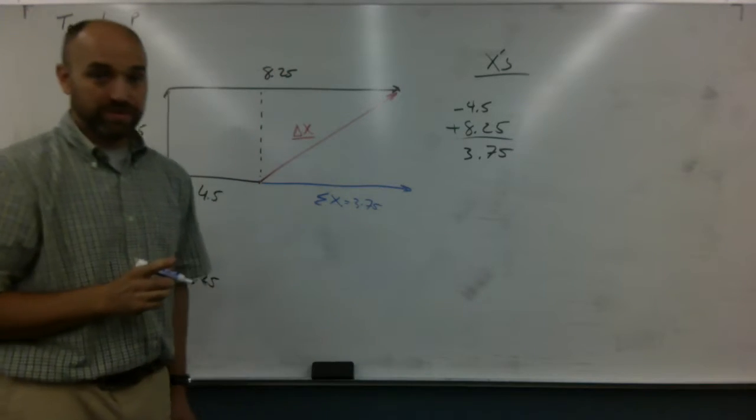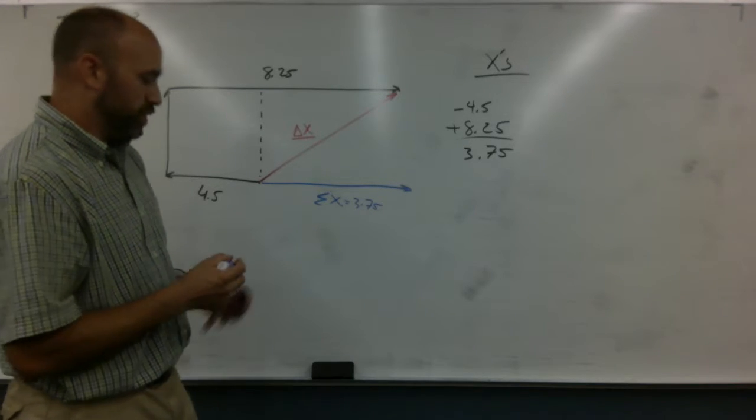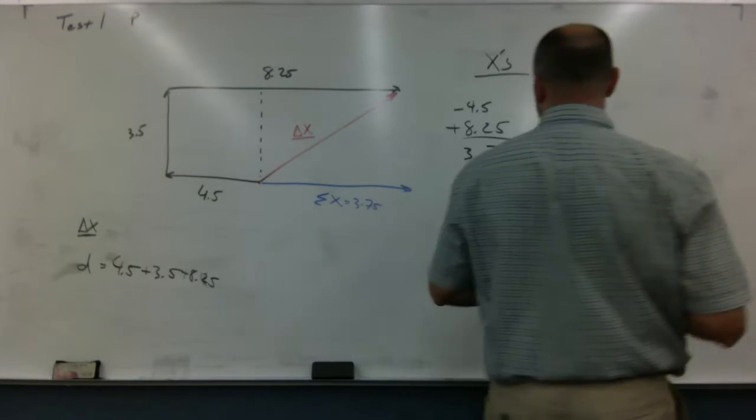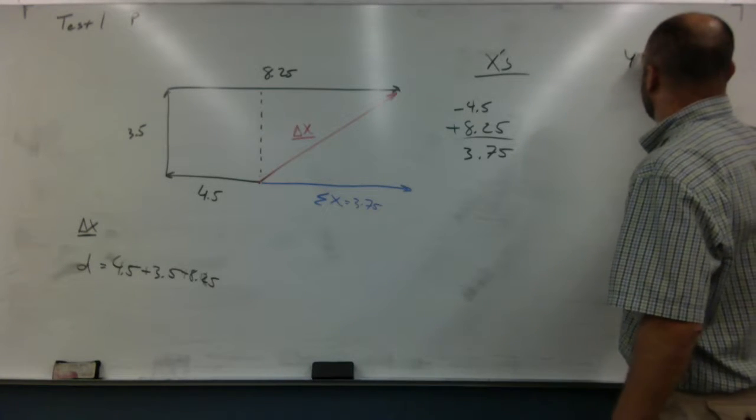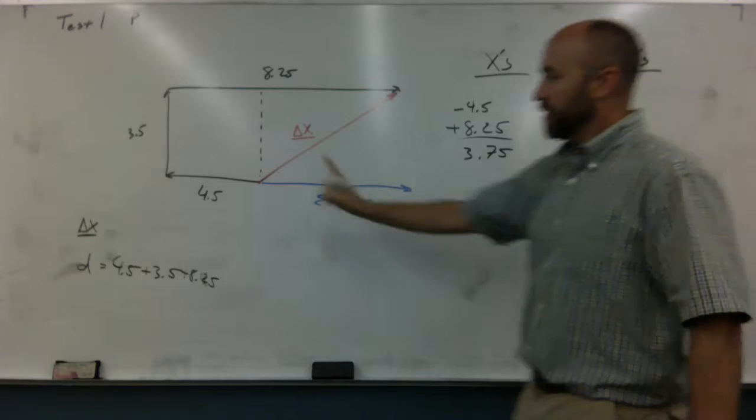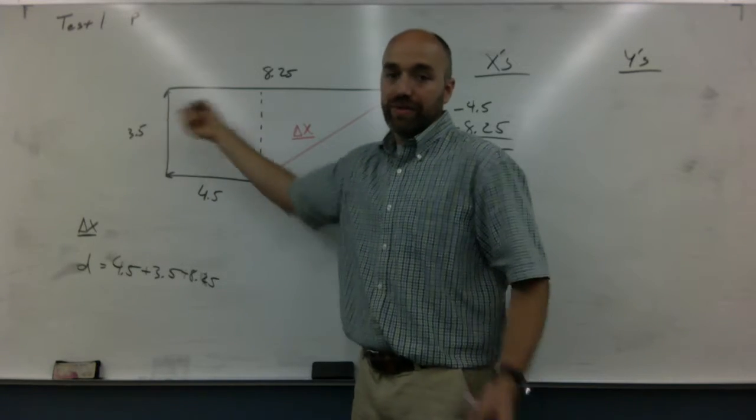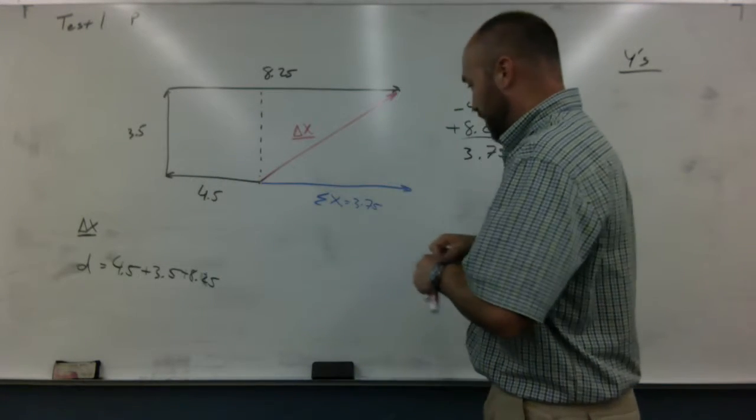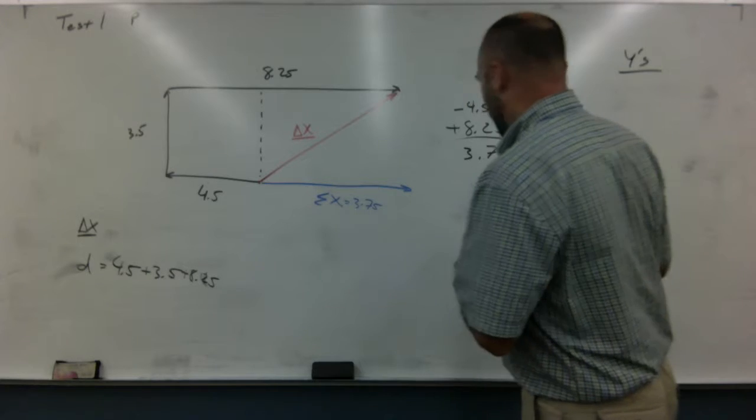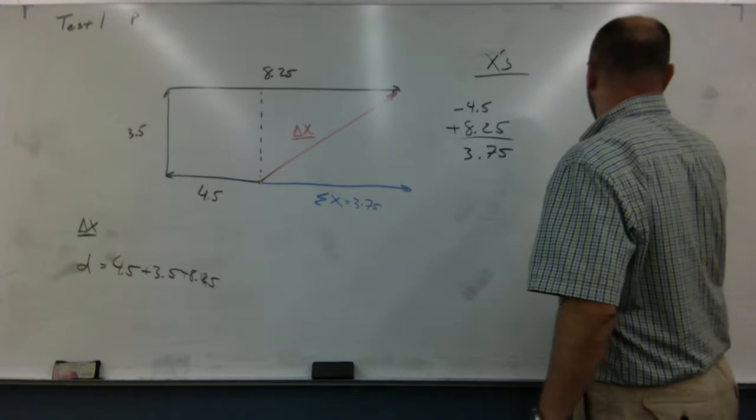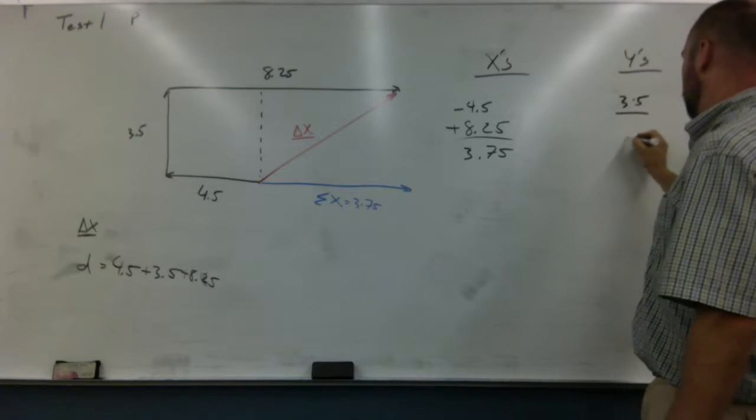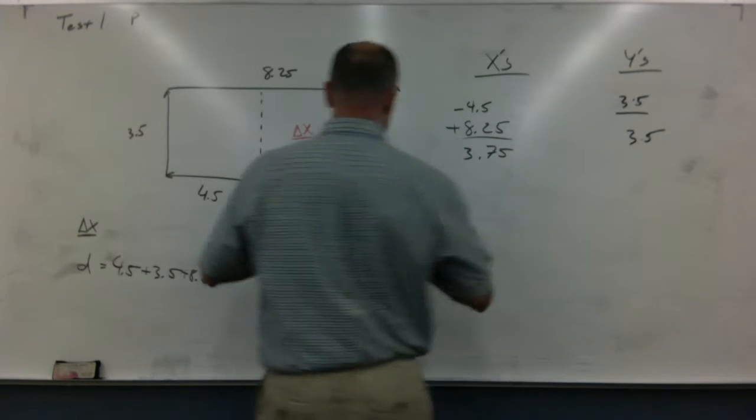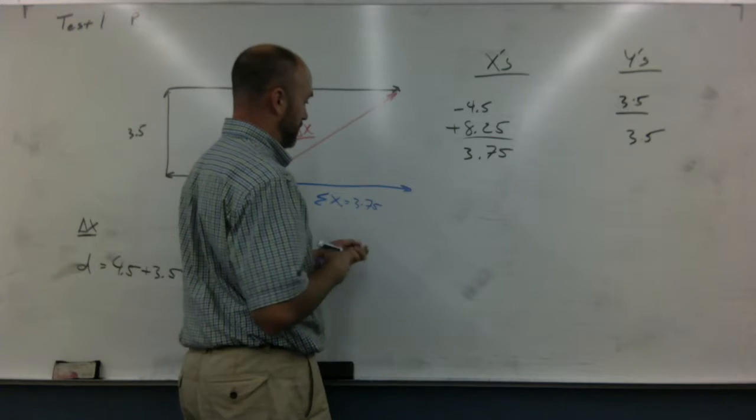Now we're going to add up our y's. For this particular problem, it's real easy because you only have one y component—everything else is horizontal. So I'm going to draw that one in blue. When we add up our y's, we're going to have 3.5 plus nothing else, and that's going to give us 3.5. I can do that with my head, so I'm going to add that one here.